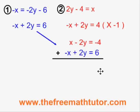The x and the negative x cancel and the negative 2y and the positive 2y also cancel. So my solution equation is 0 equals 2.